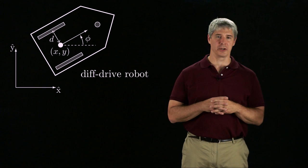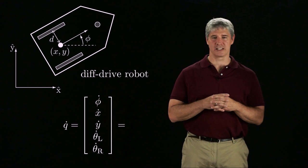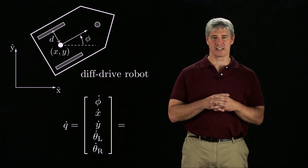A diff-drive robot has two independently driven wheels and one or more caster wheels to keep it horizontal. If we define the five-dimensional configuration of the robot as phi, the x-y position of a point halfway between the wheels, and the rolling angles of the left and right wheels,